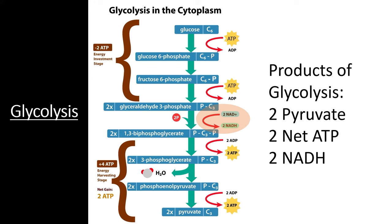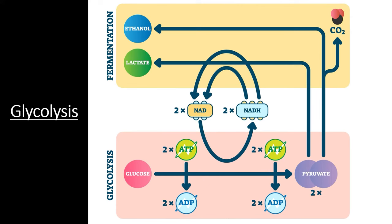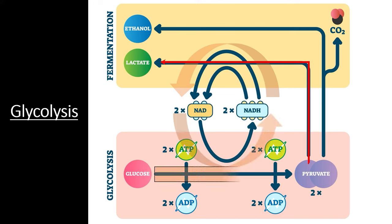What happens to these molecules depends on whether or not the cell has access to oxygen. If there is no oxygen, these molecules enter the process of fermentation. Fermentation adds the electrons and hydrogen atoms from the NADH to the pyruvate molecules. This doesn't create any more ATP, and it can leave the cell full of toxic lactic acid or ethanol if it carries on for too long. But the process does recycle electron carriers so the process of glycolysis can go through another cycle, allowing the cell to produce just enough ATP to survive.